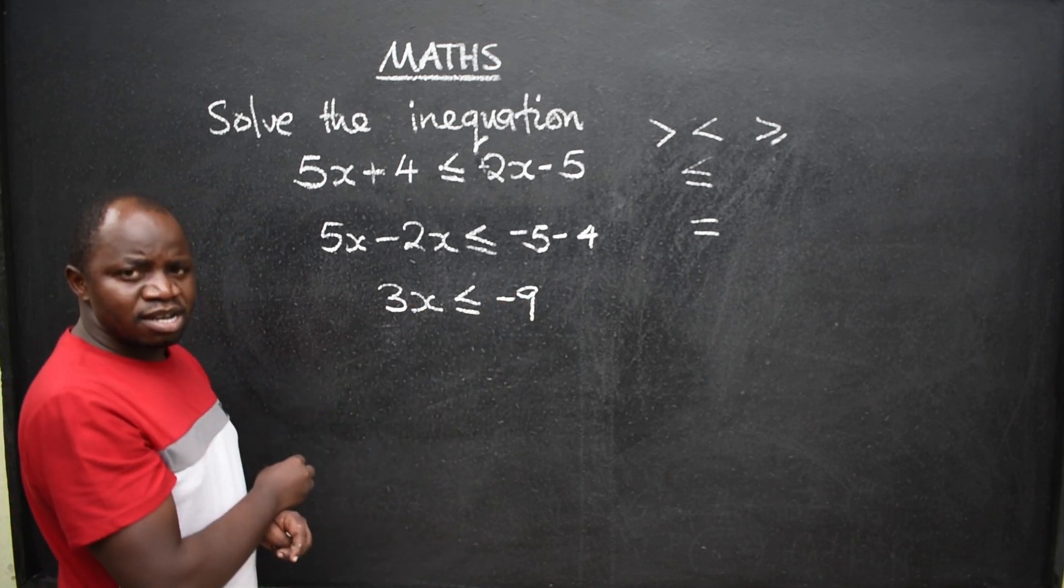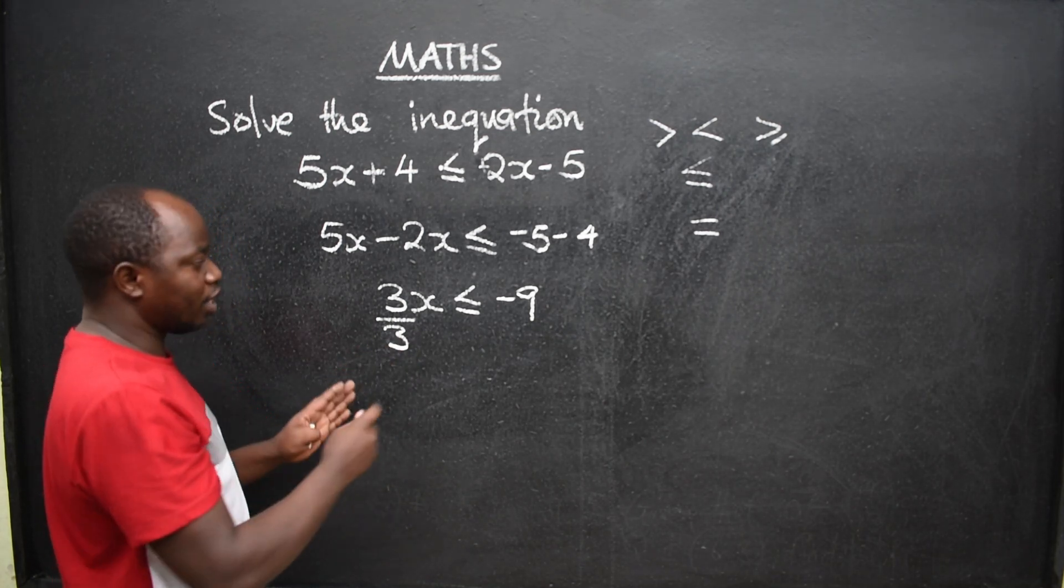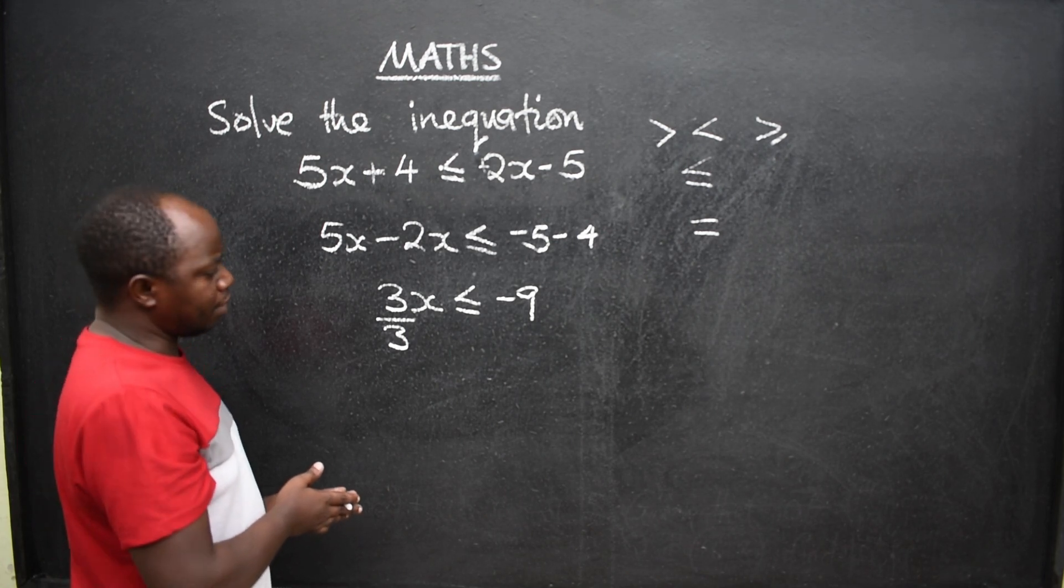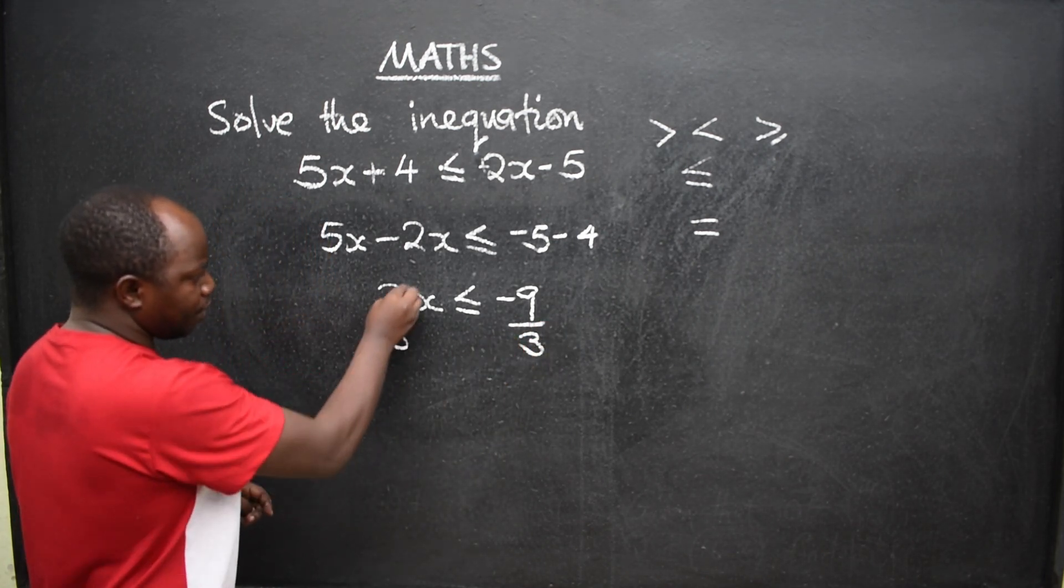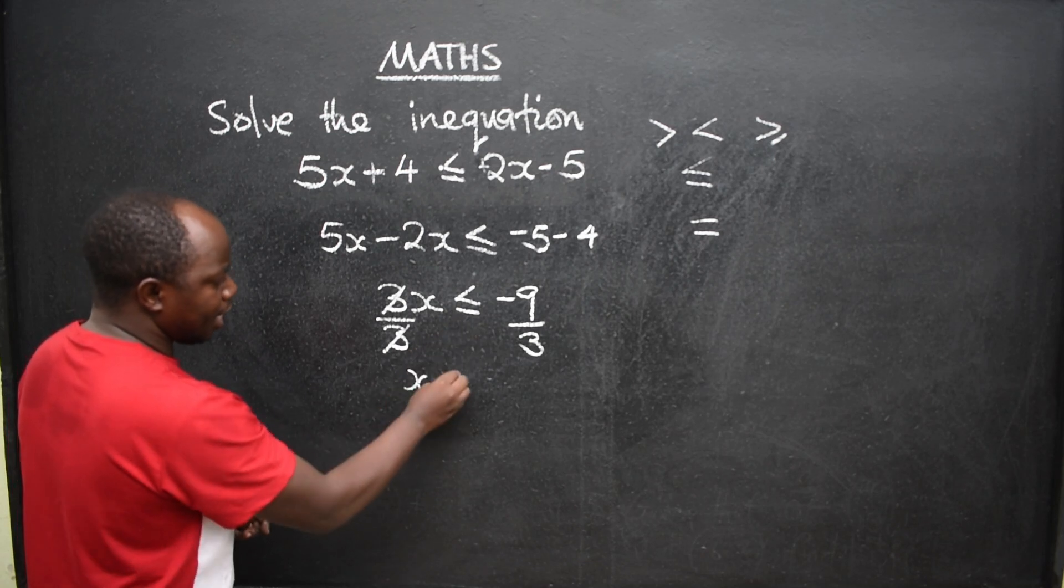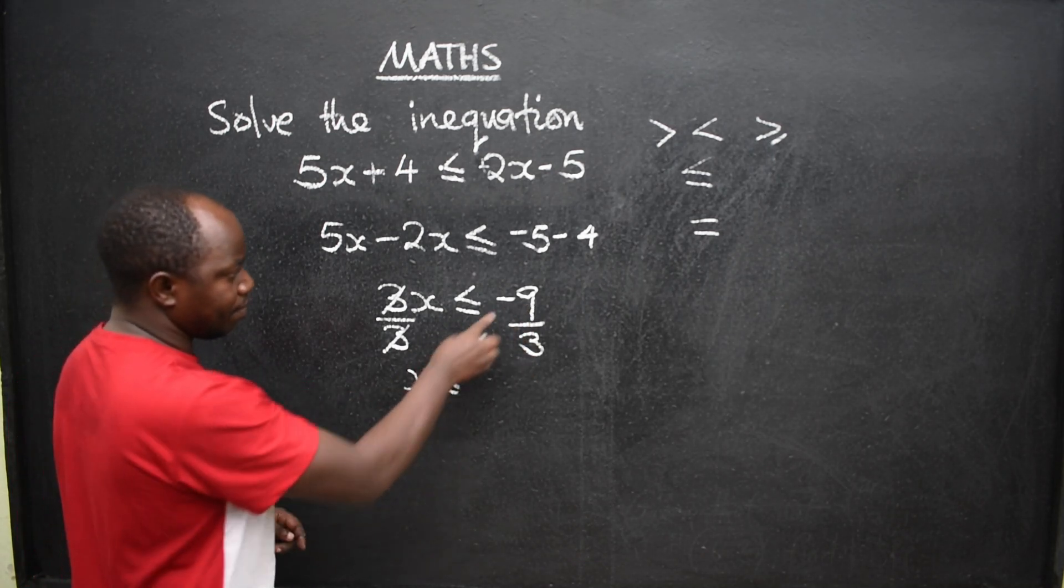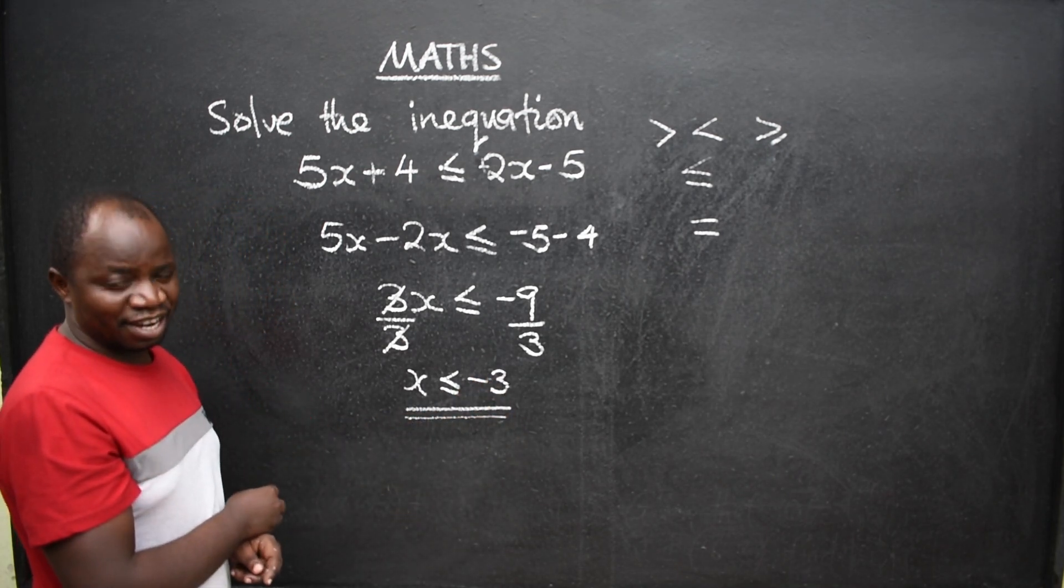To remain with x, you are supposed to divide both sides so that you don't change the language. So we have divided by 3. Even the other side, divide by 3. Cancel this. You remain with x less or equal to how many 3s are in 9? There are 3. Remember, there is a negative here. Negative 3. This is your final answer.